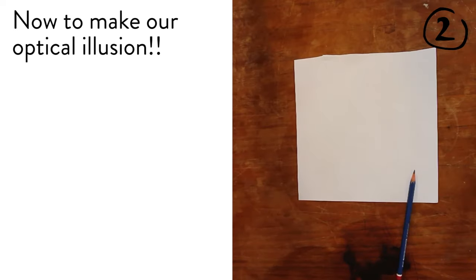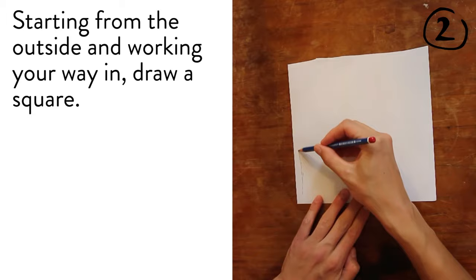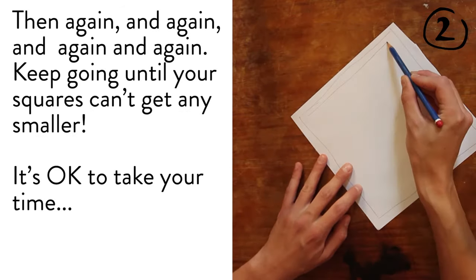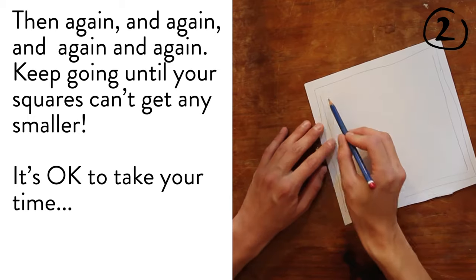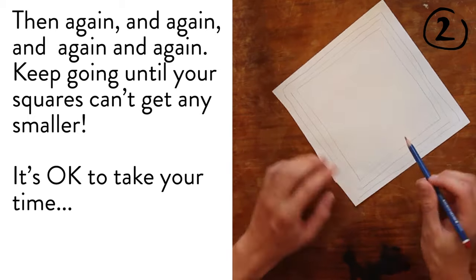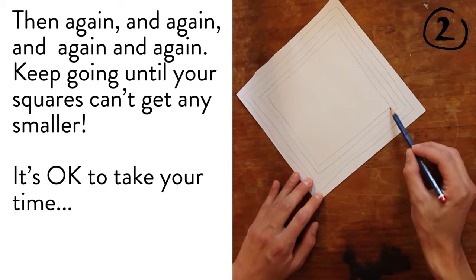Now to make our optical illusion. Starting from the outside and working your way in, draw a square. Then again and again and again and again. Keep going until your squares can't get any smaller. It's okay to take your time.